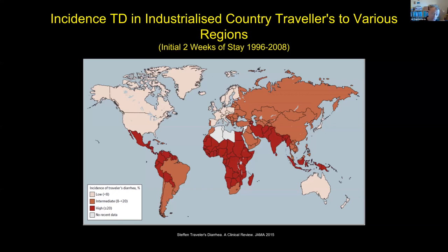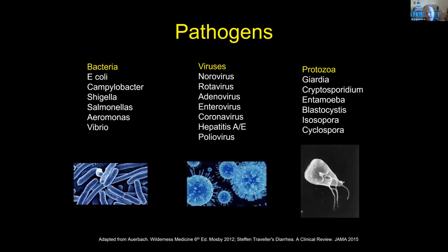It used to be considered more than 65 percent, but over the last 20 years a few studies have shown incidence greater than 50 percent, which really reflects the growing economies in many of these countries and improvements in tourist infrastructure. There is a dizzying array of organisms which can give you diarrhea.